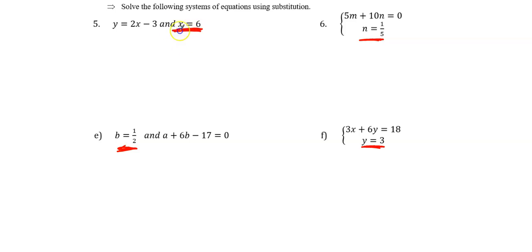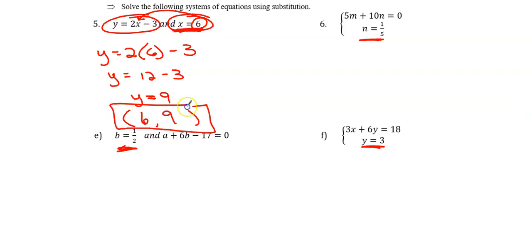So what substitution means is, this statement says that x equals 6. x and 6 are the same. We could trade. If I had x and you had 6, we could trade, and that would be a fair trade. Well, that's exactly what we're going to do. I'm going to take the value of x and substitute it into the other equation. So now I'm going to say y equals 2 times 6 minus 3. y equals 12 minus 3. y equals 9. And now I know the point where these two lines intersected was at 6 comma 9, and that would be my final answer.